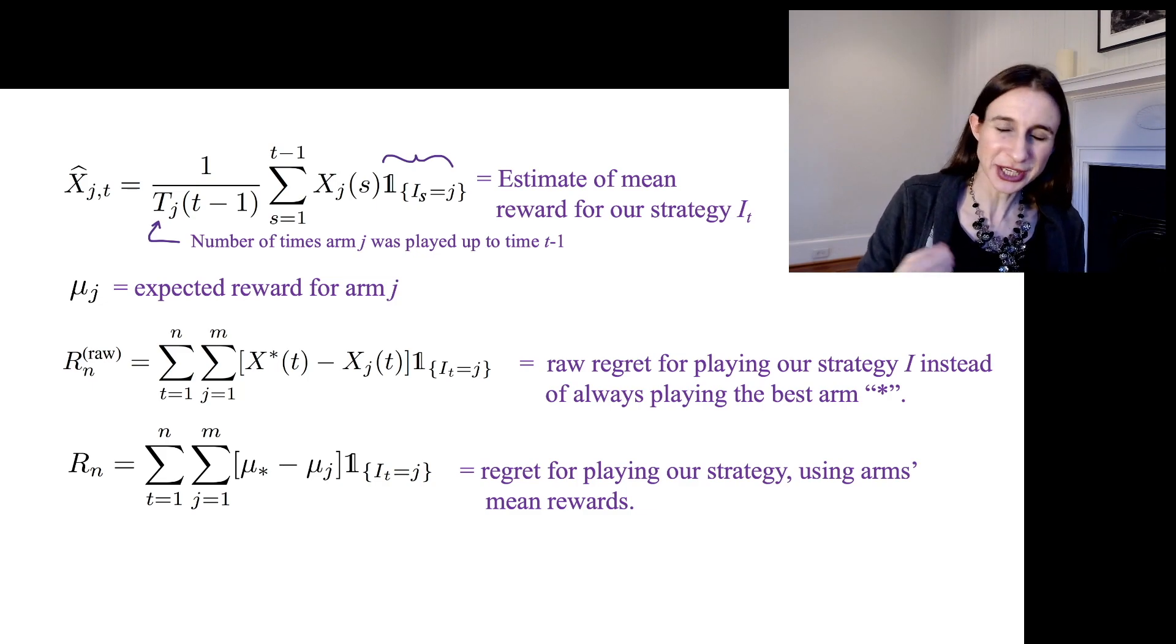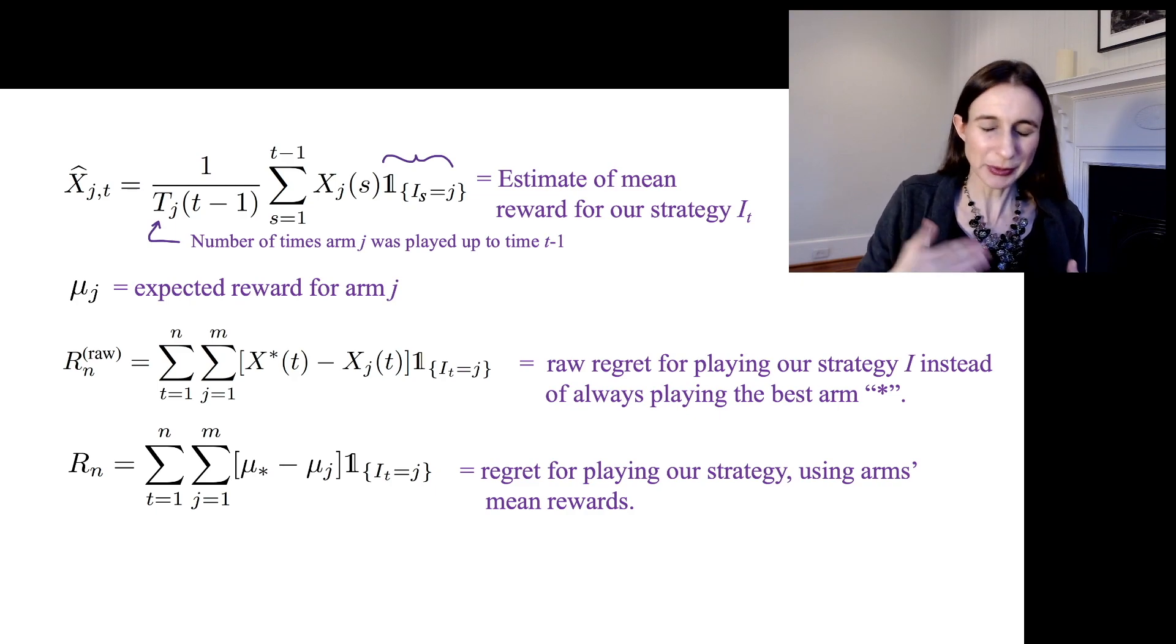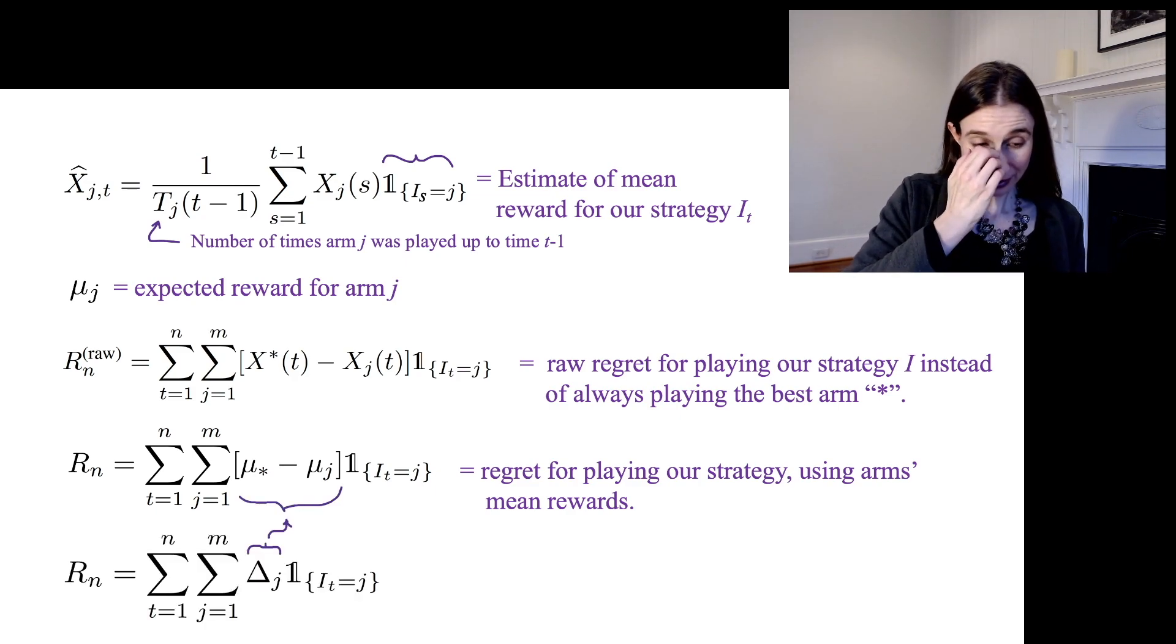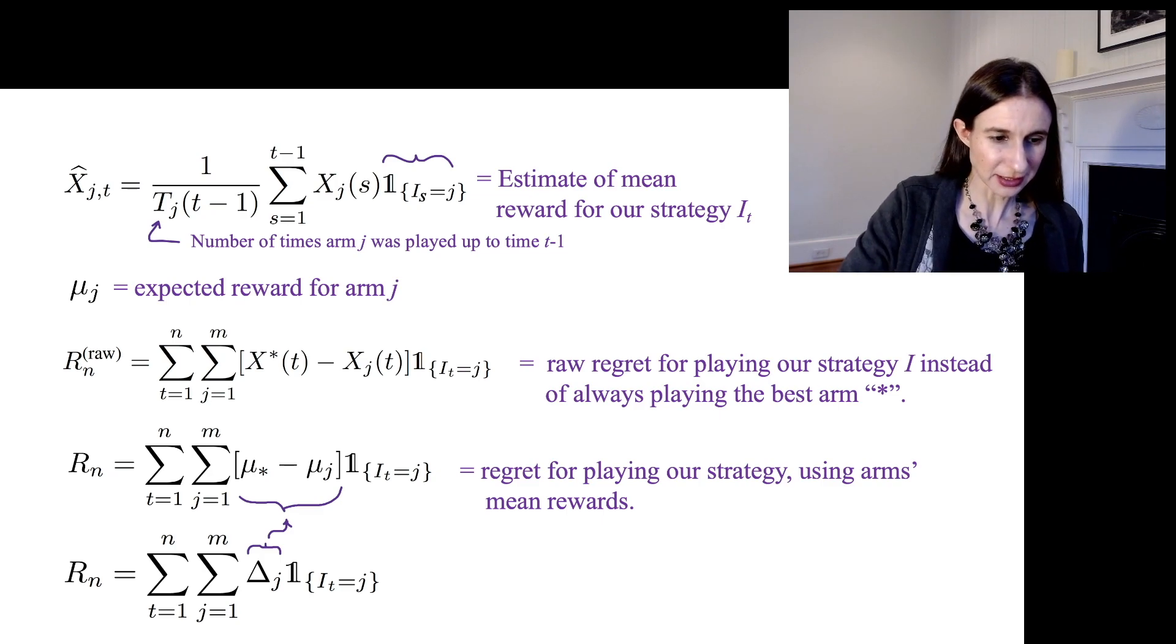We want to play arm j as little as possible so that we would have played arm star as much as possible. I'm just going to change the notation slightly where μ star minus μ_j is δ_j, so that's the regret for playing arm j instead of arm star. That's the difference in the mean rewards of these two arms.